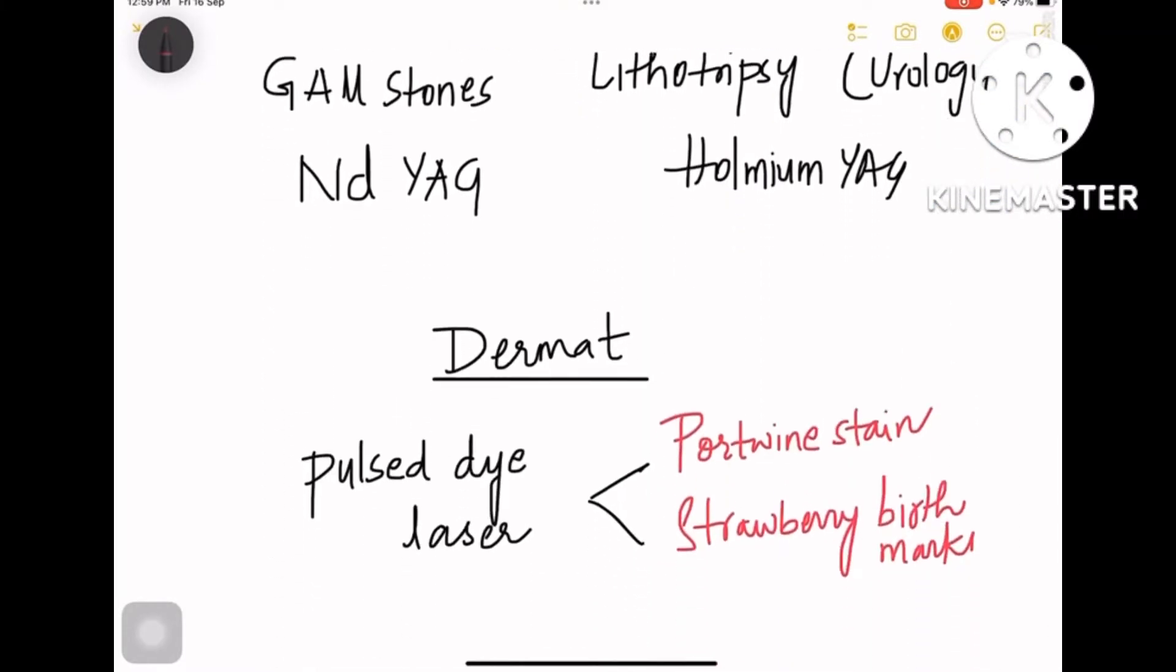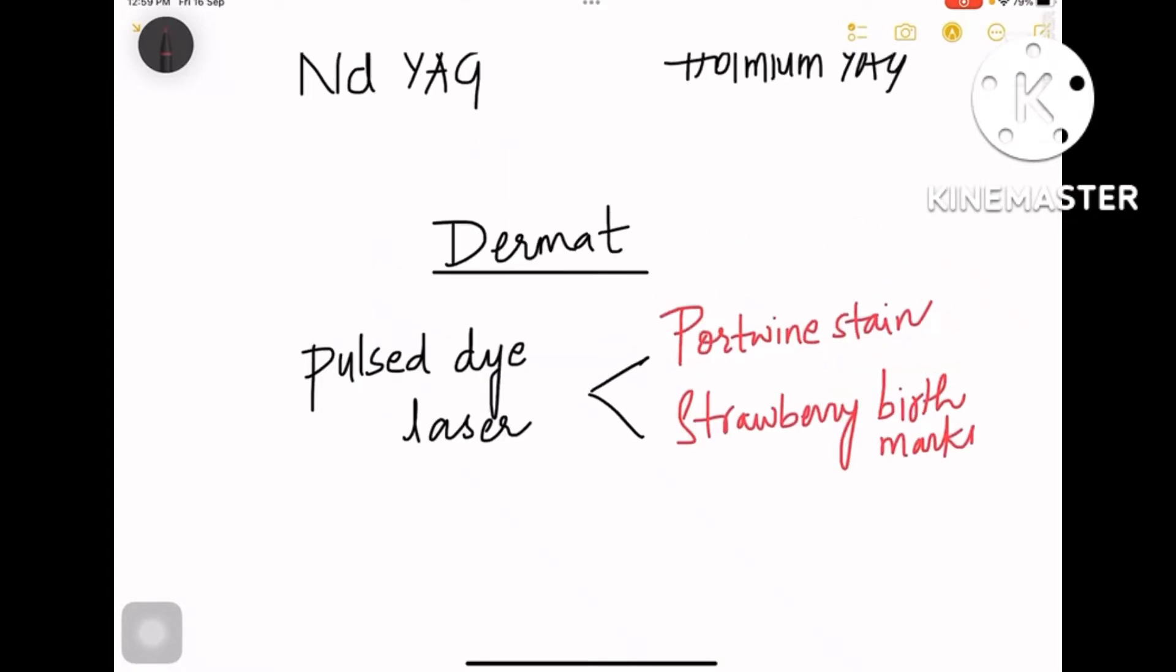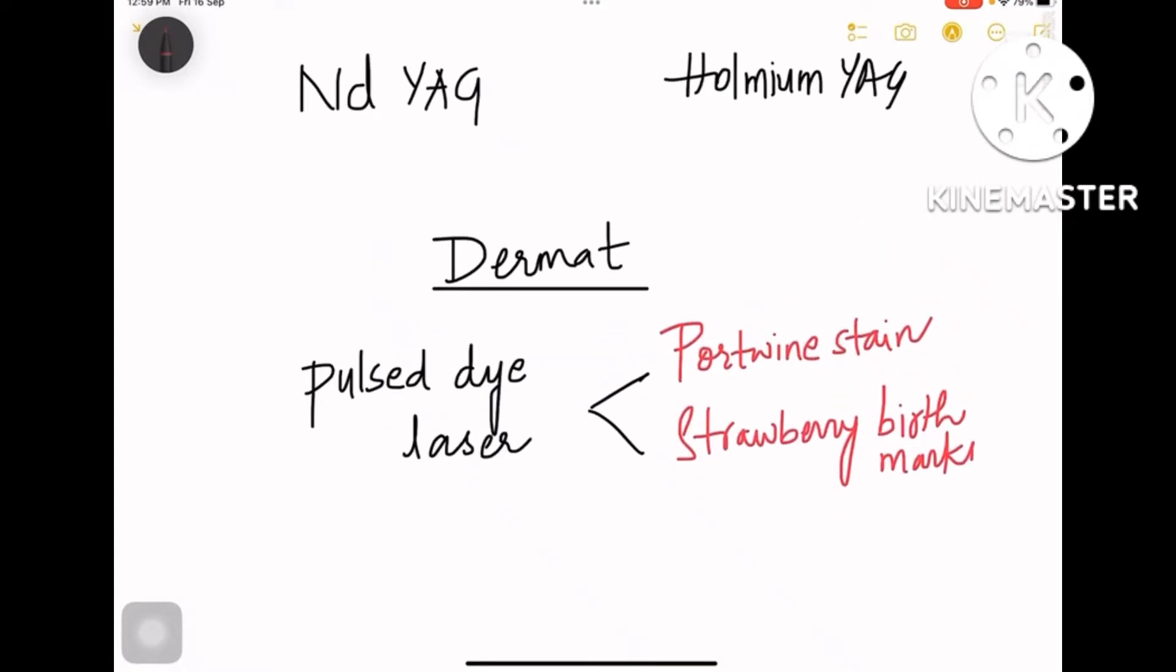Firstly, let us start with dermatology. Dermat is all about colored stains, colored diseases, right? Like you have port wine stain and strawberry birthmarks. So all these are about colors, so you use pulsed dye laser in dermatology.